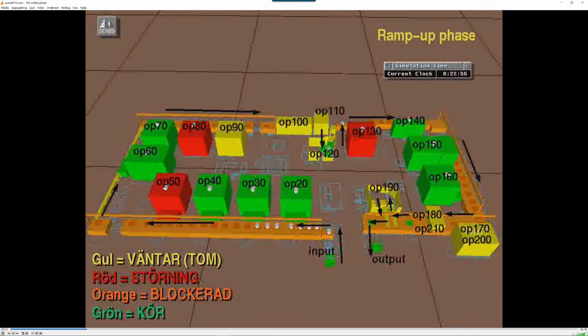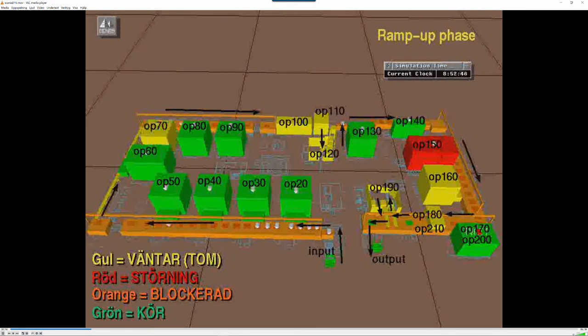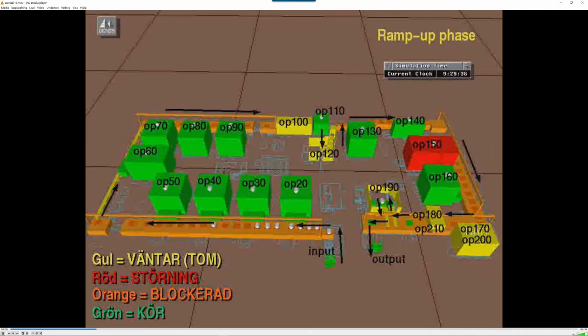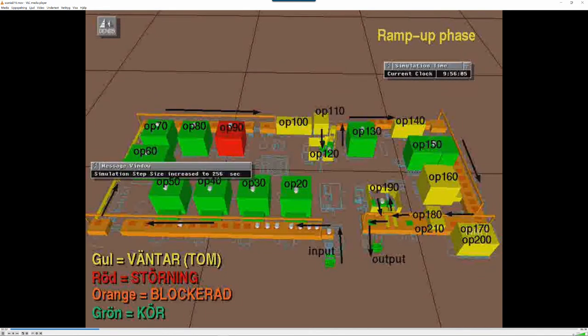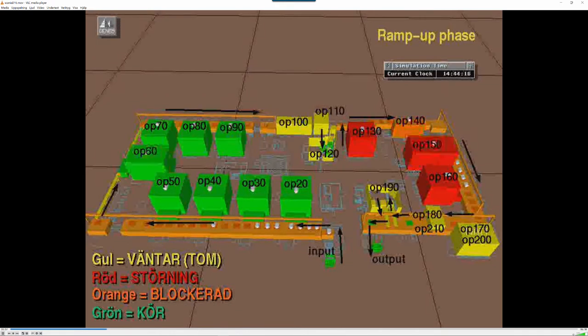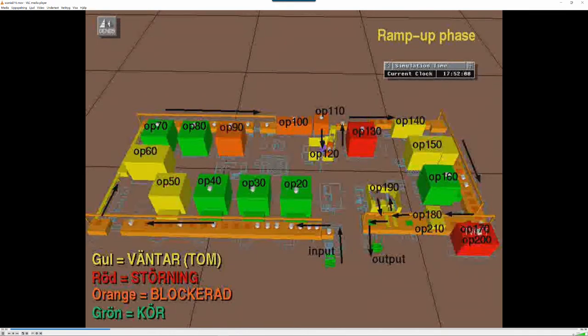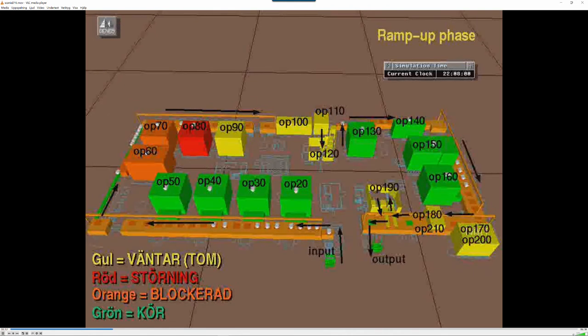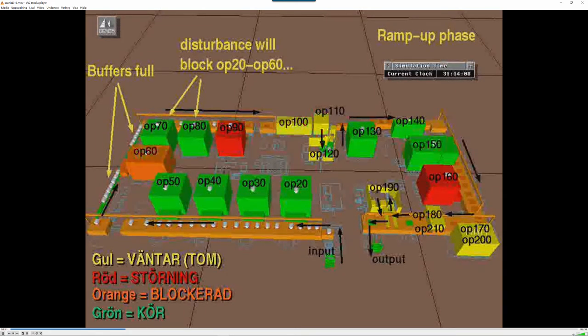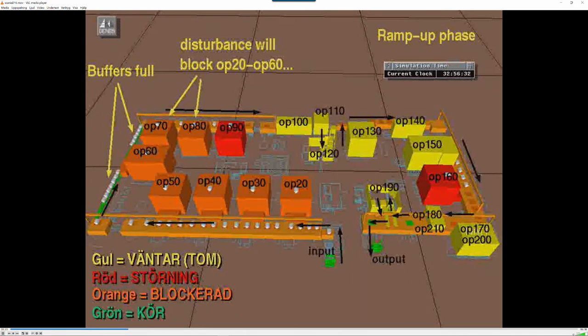Yellow is waiting, red is disturbance, orange is blocked machine, and green is running. At the moment we can see that there is a variation—we have some orange which are blocked, and there is a disturbance going on. Still, it's the ramp-up phase, so we don't care about this at the moment.